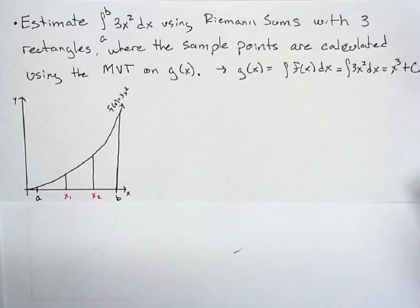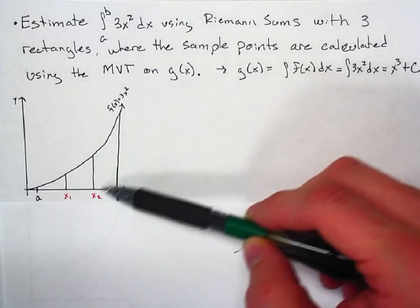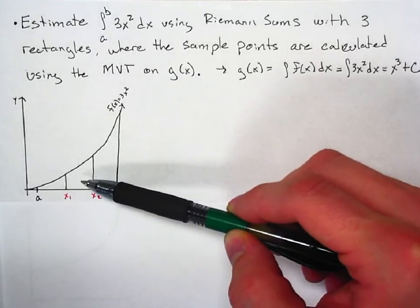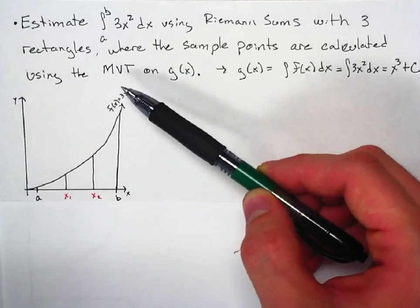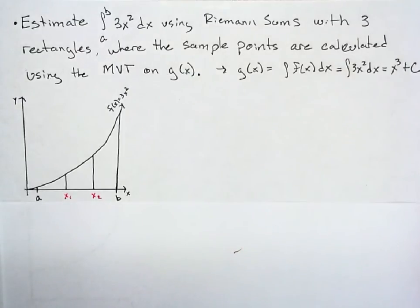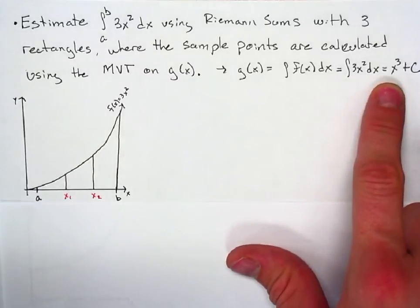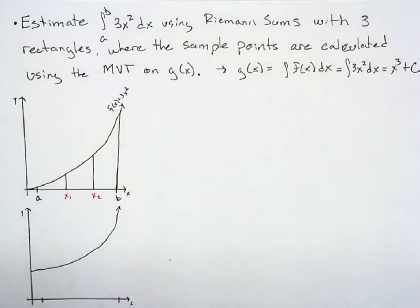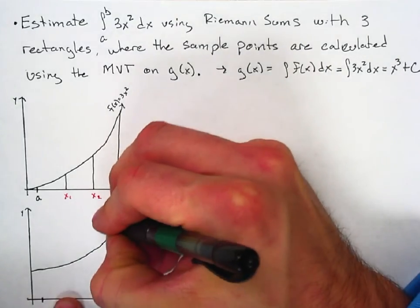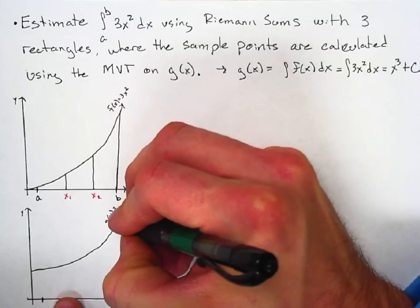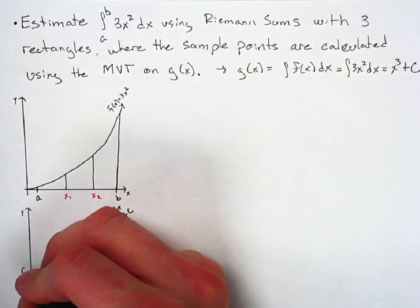The problem is we need to figure out what sample point to use for the height of the rectangle in each of the three intervals. We're told the sample points have to be calculated using the Mean Value Theorem, which we've recently discussed. So we apply the MVT on g of x, which means we're working with x cubed plus c.